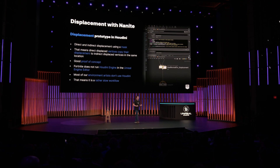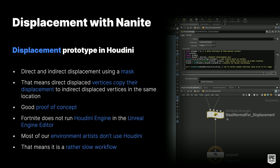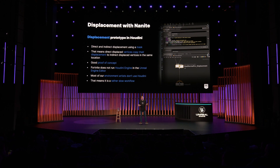We started building a displacement prototype using Houdini. We generate a mask that determines which vertices are directly and which are indirectly displaced. Each indirectly displaced vertex looks up the distance to each directly displaced vertex, and if it's within the same distance, it copies the displacement vector from direct to indirect — giving us a clean, crack-free mesh. This was a great proof of concept, but sadly we don't use Houdini Engine with our Fortnite editor builds, and our environment artists don't use Houdini itself to model environment assets, so this workflow would be rather slow.